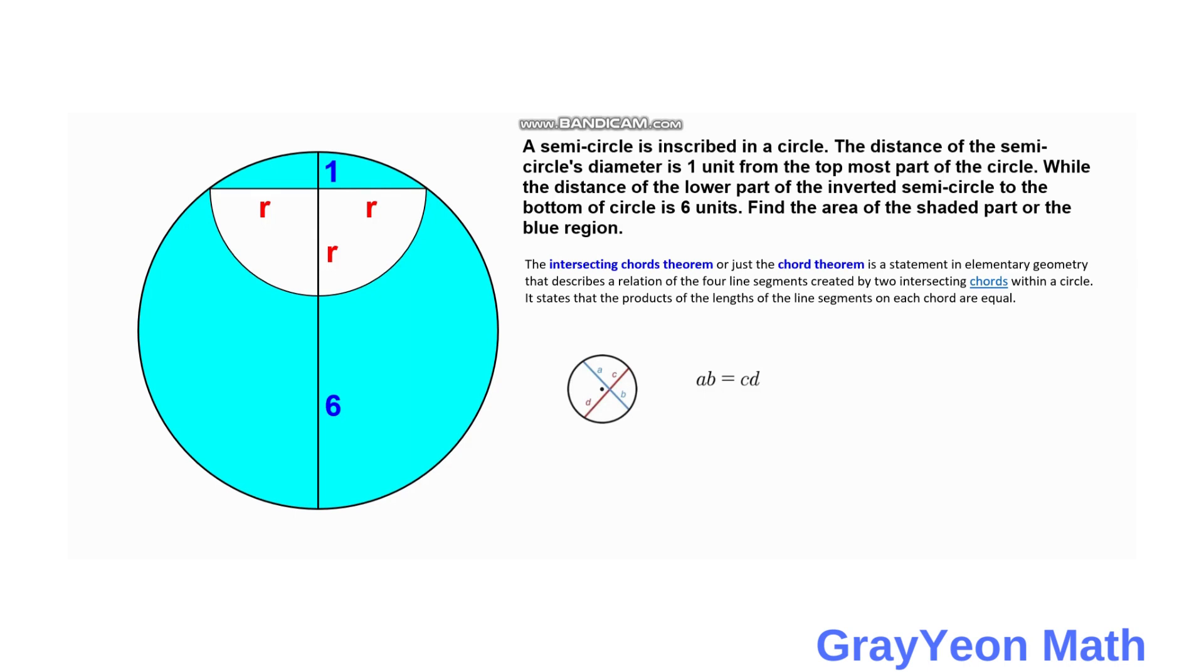Next, now we apply the intersecting chords theorem. Then we focus on the horizontal chord. So for the horizontal chord, we have R times R equal to the product of the vertical chords, which is 6 plus R times 1.